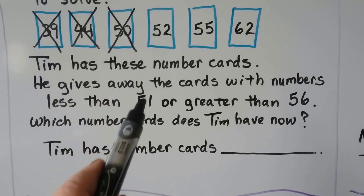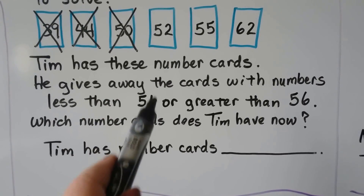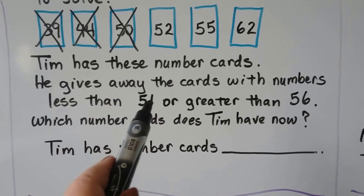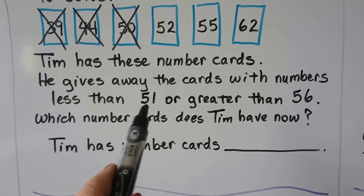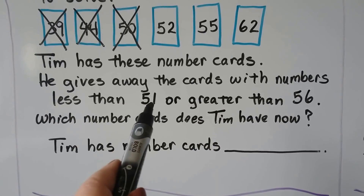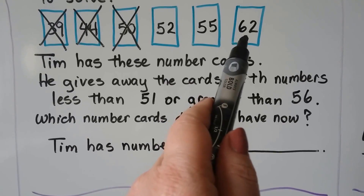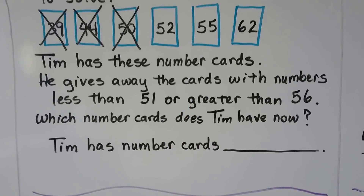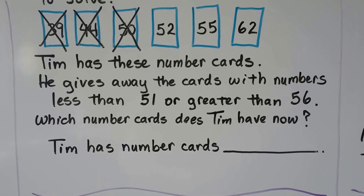Is 52 less than 51? It's got two ones — nope. How about 55? Is that less than 51? It's got five ones — nope, it's not less. How about 62? Is that less than 51? It's got six tens and 51 has five tens — no, it's not less.